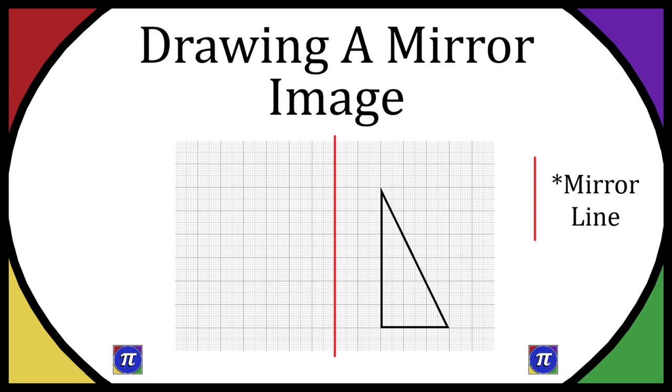So for example let's take this top point of the triangle and then we're going to do a cross two big squares across from the mirror line because that's how far it is from the mirror line on the right hand side.